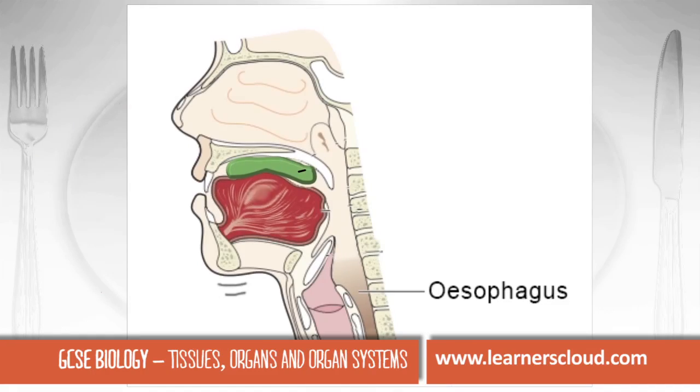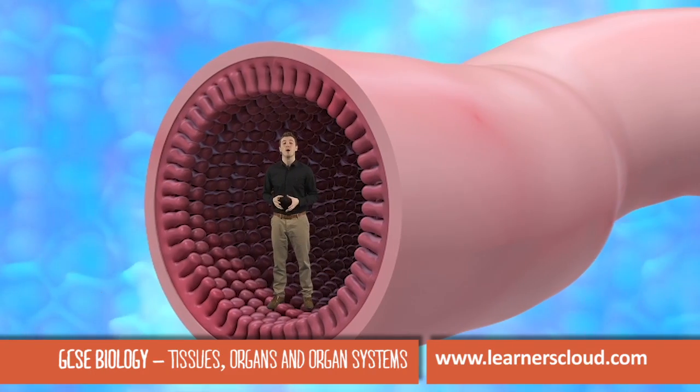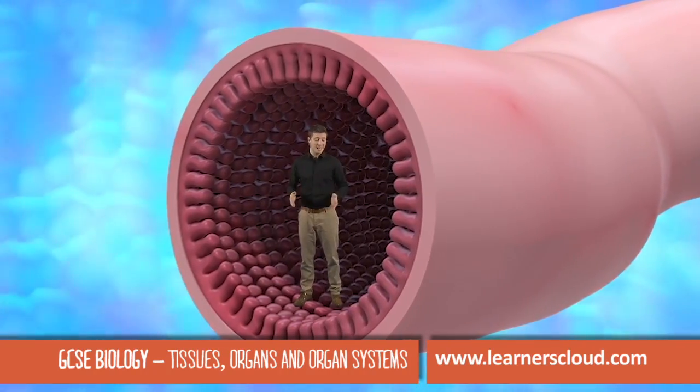The food then forms a ball of food known as a bolus. Some of these parts are so small that they can be absorbed here in the small intestine.